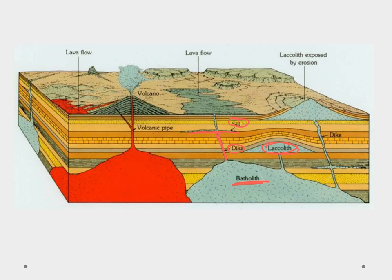If the laccolith is forced up to the surface, we can get erosion and mountains that form from that. Our smaller ones are plutons, and if these plutons lump together and join together, they can form what we call a batholith, and sometimes those will form their way up to the surface.